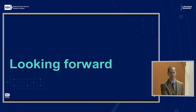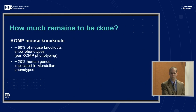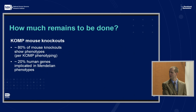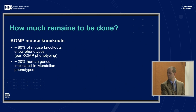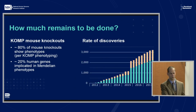What are we looking forward to in the rest of the program? A constant question is: how much remains to be done? Two different lines suggest we are nowhere near complete. First, COMP — with their careful phenotyping pipelines — actually sees one, usually more than one, phenotype in about 80 percent of their knockouts, including embryonic and early lethal as phenotypes. At present, about 20 percent of human genes have been implicated in Mendelian phenotypes. There's clearly a large gap. And the rate of discoveries is continuing consistently.